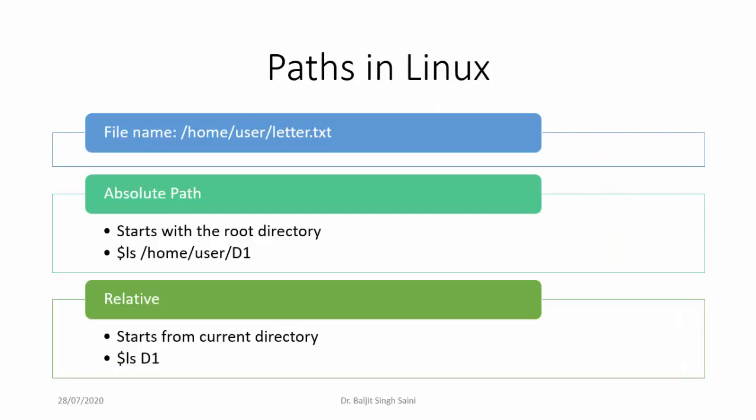Every file that we create in Linux has a path attached to it. For example, slash home slash user slash letter dot txt. Now letter dot txt is the file, whereas the entire path for this file is slash home slash user slash letter dot txt. Whenever you want to refer to this file — edit it, view the contents, delete it, or copy it — you actually need to write the full path.